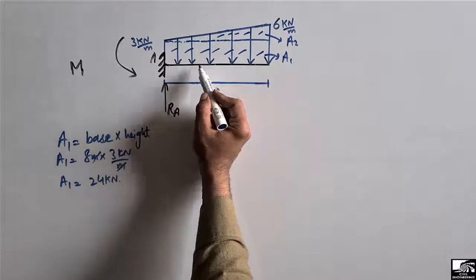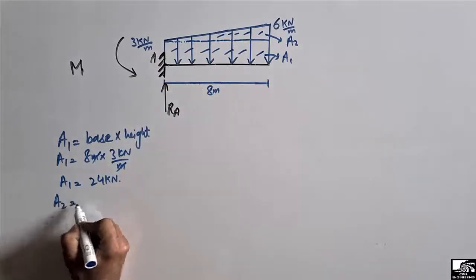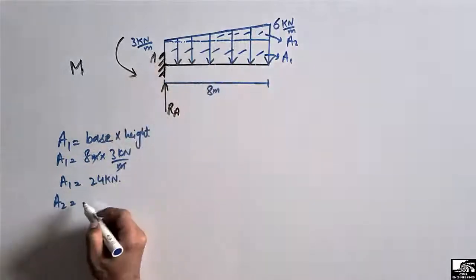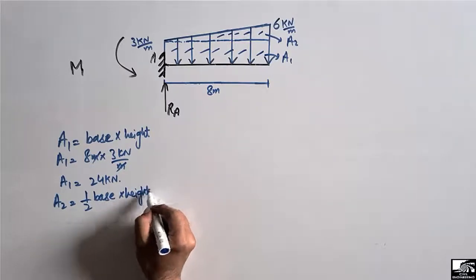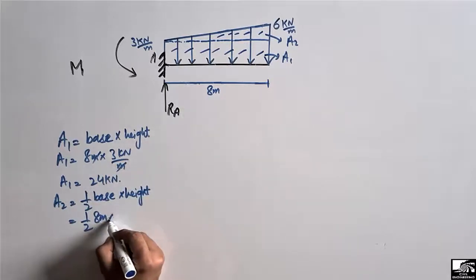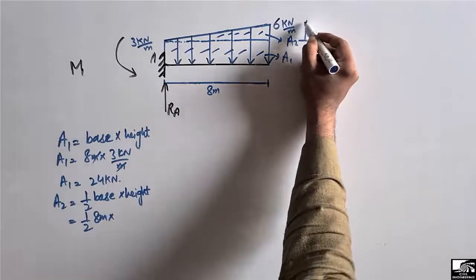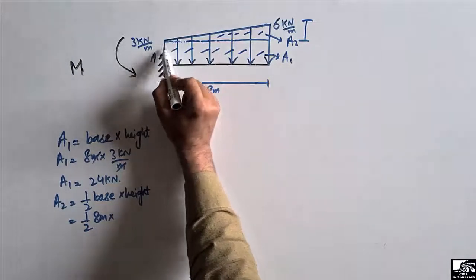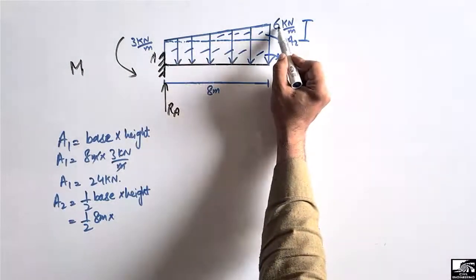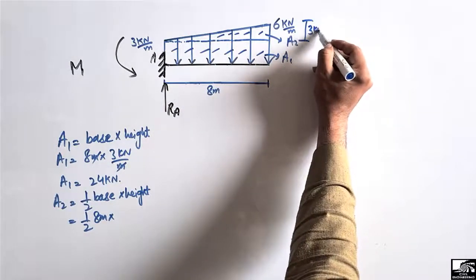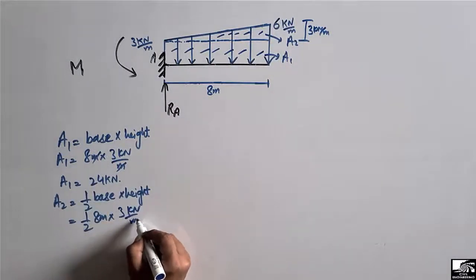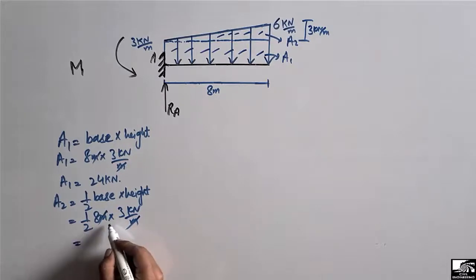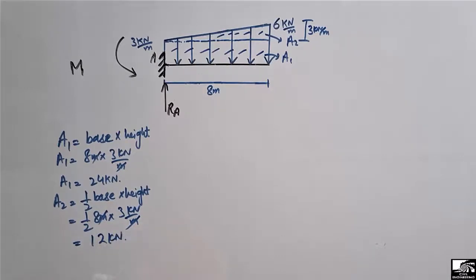For A2, the area of the triangle, it is one-half times base times height. The base is 8 meters. The height of the triangle is 6 minus 3, which equals 3 kilonewton per meter. Multiplying this out, we get A2 equals 12 kilonewton.